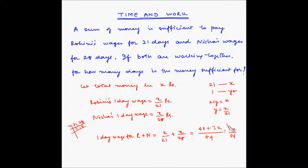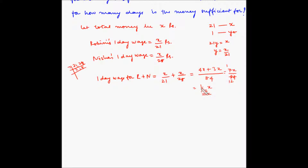Simplifying 7 by 84 gives 1 by 12. So the one-day combined wage is 1 by 12 of X. So the total number of days that the money will be sufficient for is the reciprocal of this, which is 12 days.